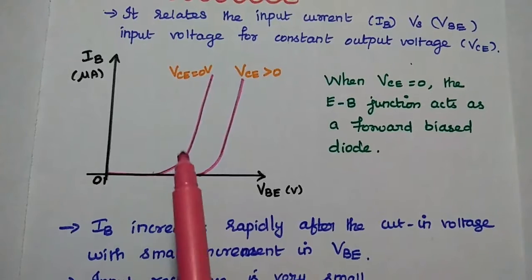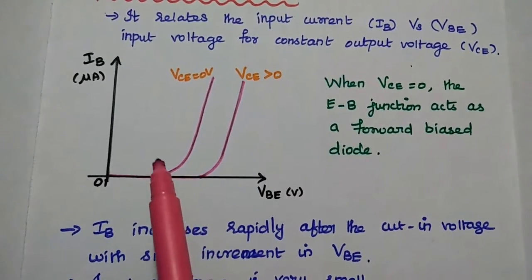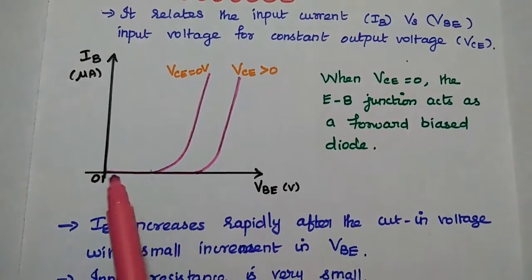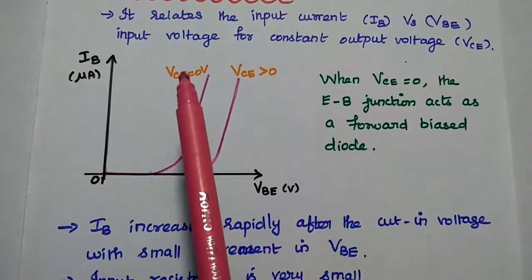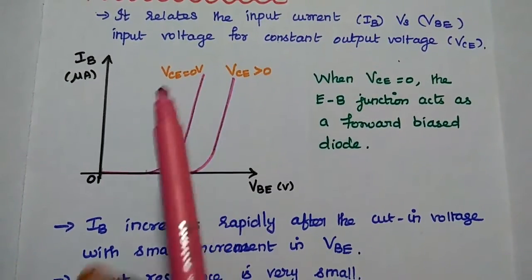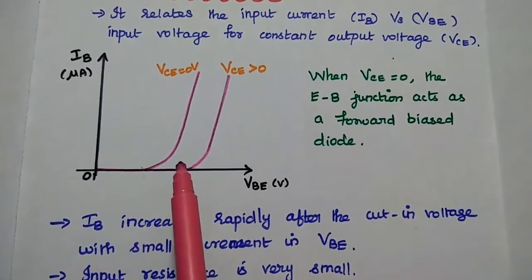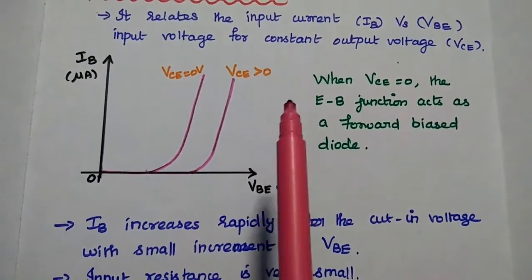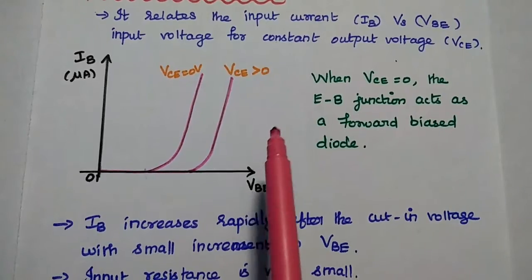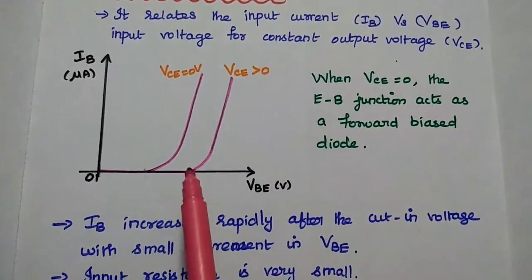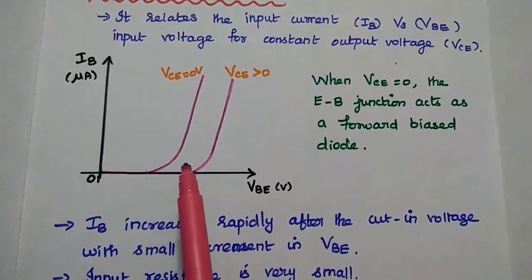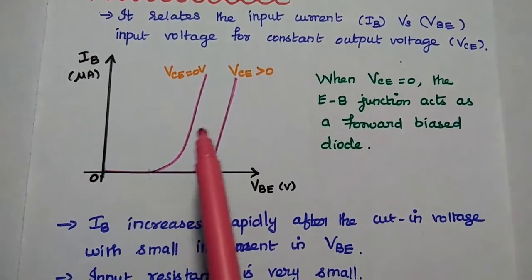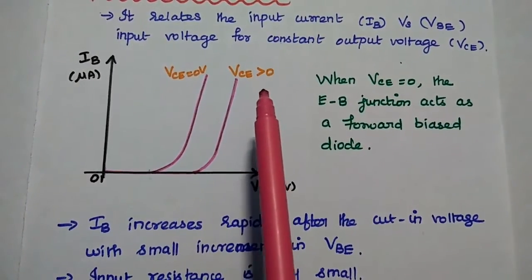Up to the cut-in voltage, there is no current conduction. But after the cut-in voltage, with a small increment of input voltage, there is a large current conduction. So whenever the output voltage is equal to 0, it acts as a forward biased diode. When the output voltage is increased — that is, when the reverse bias voltage at the output side is increased — due to base width modulation, the base current decreases, and this curve shifts to the right for VCE greater than 0.